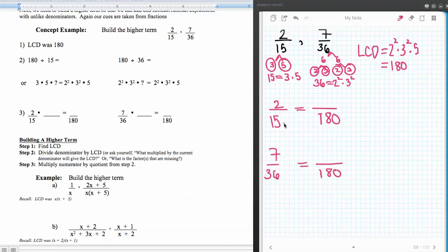So what I need to know is what do I multiply by fifteen in order to make one hundred and eighty. So if I don't know, there's no need to get out your calculator here. You see this three and this five here, right? There's one of those there and there's one of those there. So there's still a three missing and then two squared. So this is going to be times twelve.